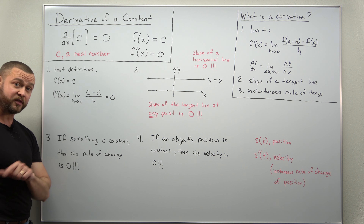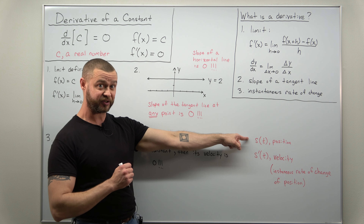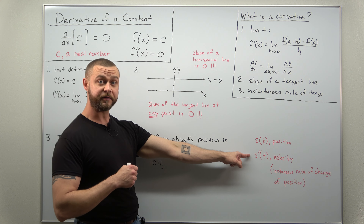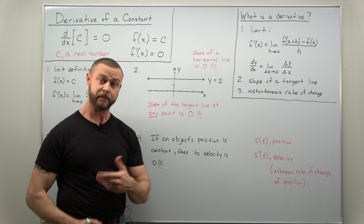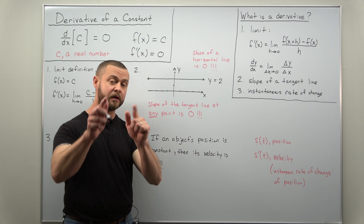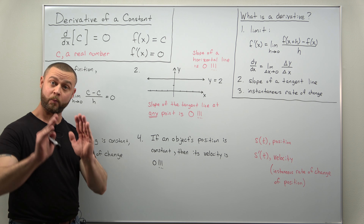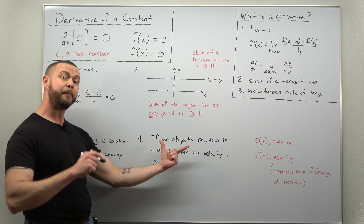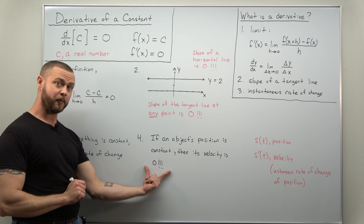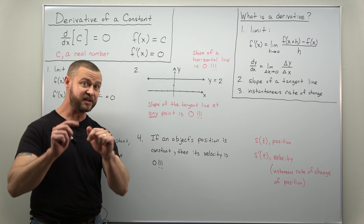A fourth way to understand this rule: consider our function as representing the position of an object at a certain time. The derivative — the instantaneous rate of change of position — is what we call the velocity of the object. We typically denote the position function as s of t, and velocity as s prime. So the fourth way to understand this, which is important for physics: if an object's position is constant — if something's just in the same spot — then its velocity is 0. And there we go, that is four different ways to understand this basic differentiation rule.